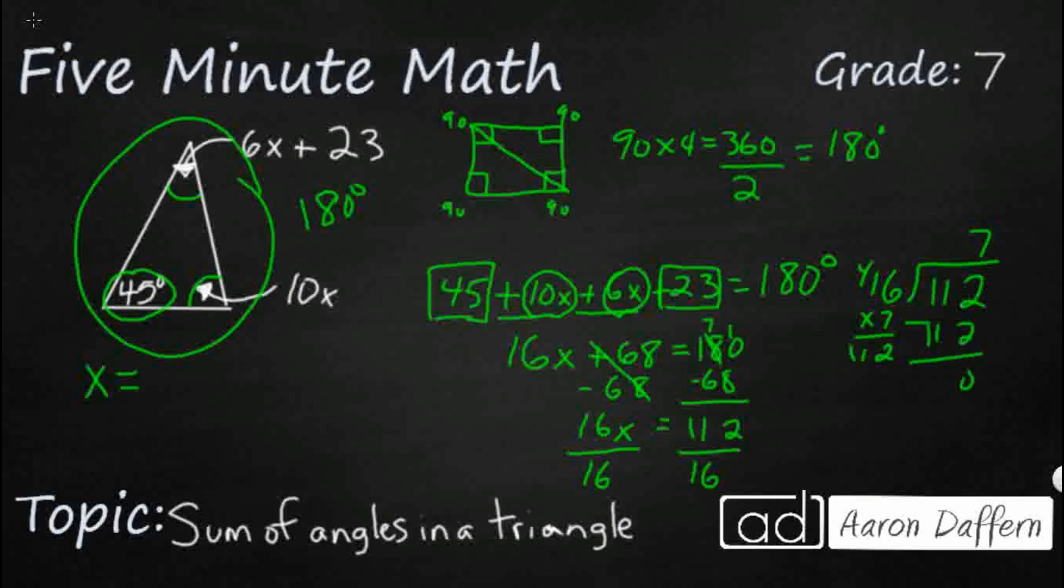So x equals 7, which means this angle right here is 10 times 7, right? So that's 70 degrees. And this angle here is going to be 42 plus 23. So that is going to equal 65 degrees.